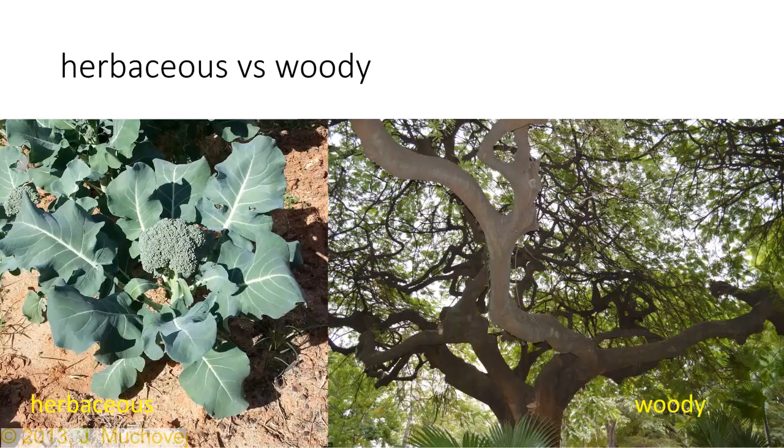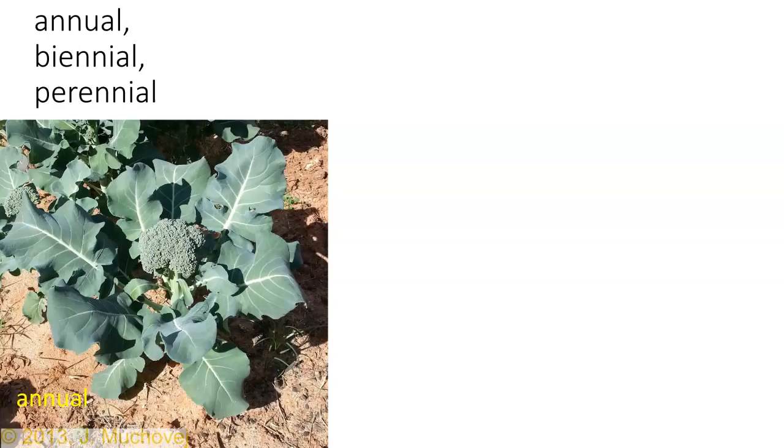Three more words: annual, biennial, perennial. Annual means something that works on a yearly basis. Biennial means two years. Perennial means something that comes back year after year. When we're looking at growth habit we look at things like annuals — back to our broccoli plant — and this broccoli plant grows on an annual basis.